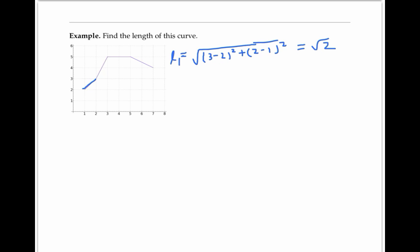Similarly, the second piece has length given by the square root of five minus three squared, plus three minus two squared, which is the square root of five.